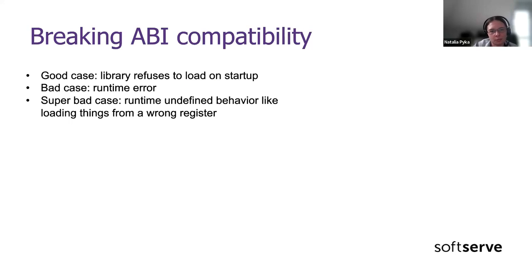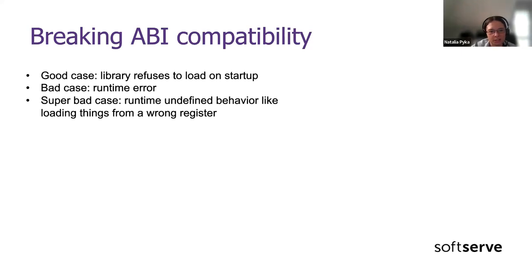What can happen if ABI compatibility is broken? More or less, we get undefined behavior. In a good case, we'll get an error about a particular library not loading on startup. In a bad case, we'll get a runtime error where some function with a mismatched signature is called. In a super bad case — which is also a corner case — we'll get runtime undefined behavior when mismatching functions are called. For example, we'll load calculation results from a wrong register containing garbage, and we'll only know about it after a long time because our calculations will go completely wrong.